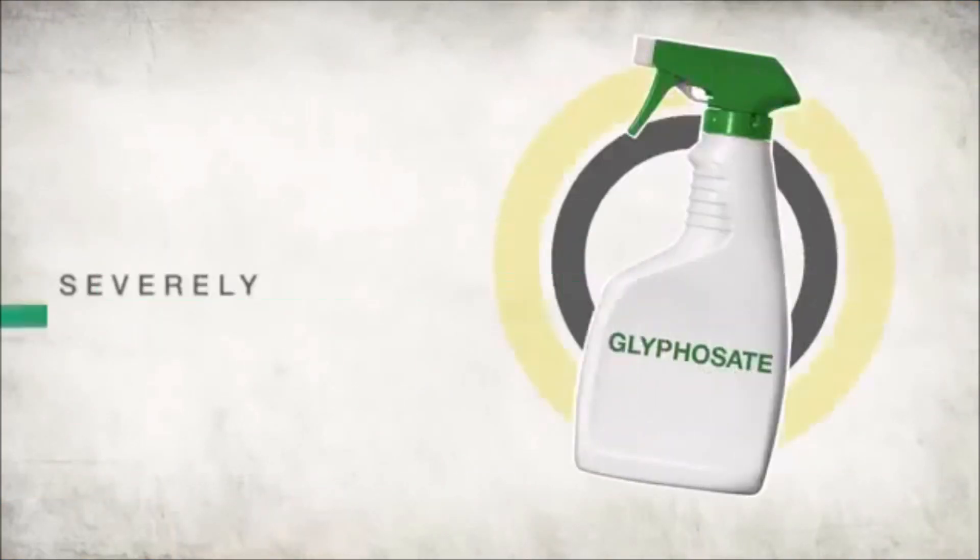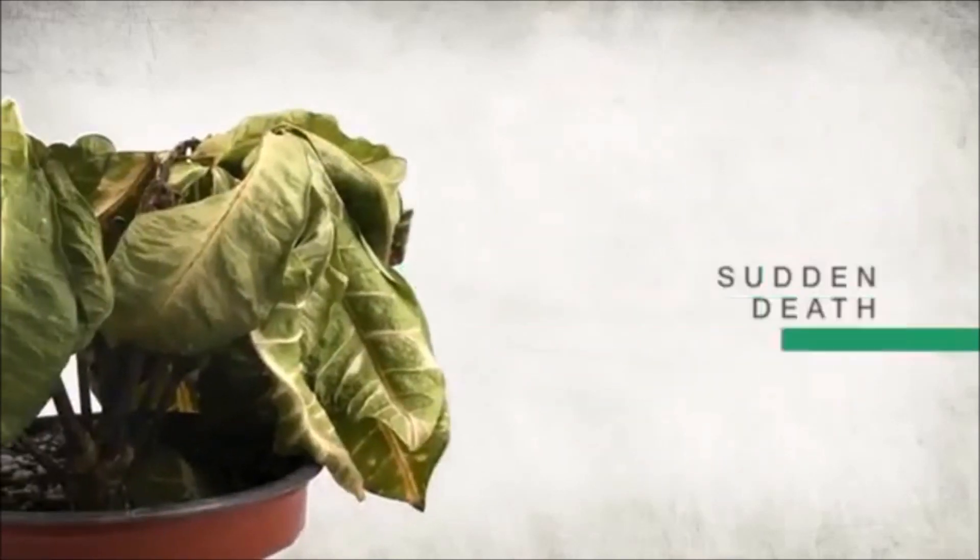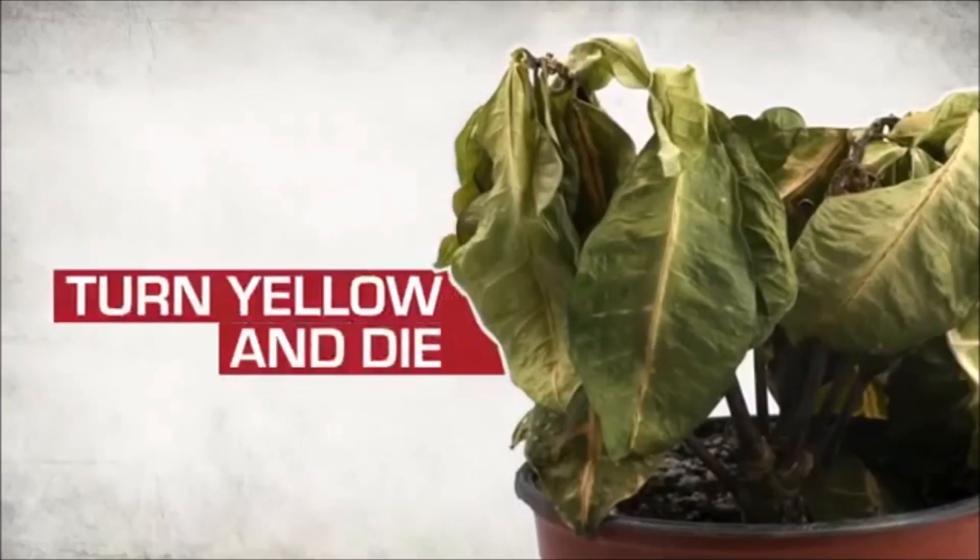Genetic engineering destroys the environment. Glyphosate pesticides severely harm both GMO and non-GMO plants, and even lead to Sudden Death Syndrome, a plant disease that causes plants to turn yellow and die.